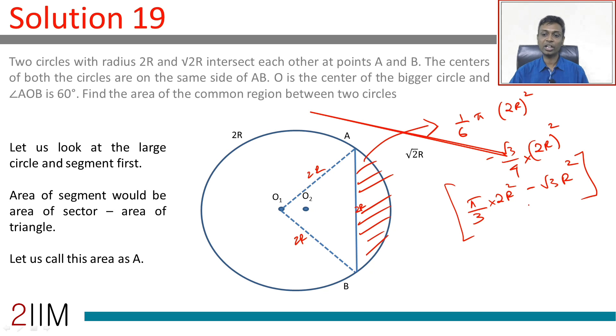And so, 2 pi by 3 R square is 1 sixth of the circle, angle in between is 60 degrees, 60 by 360, 1 sixth of pi R square, radius is 2R, we have got this down.